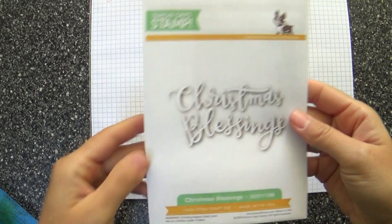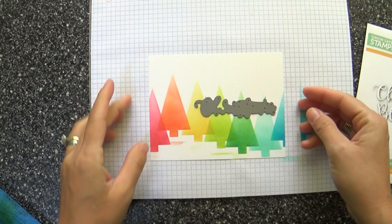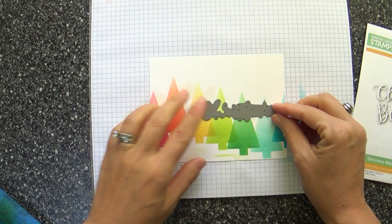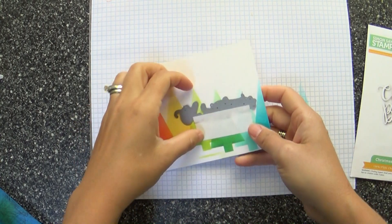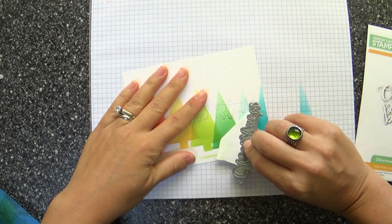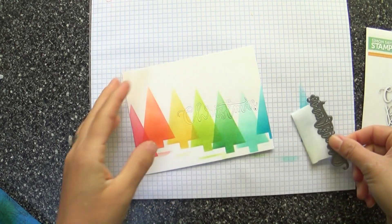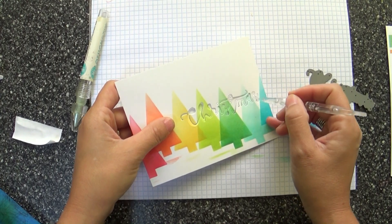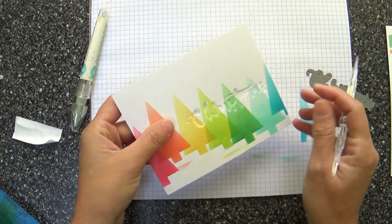Now we're taking the Christmas Blessings die set—I'm just using the Christmas word and I'm going to die cut that right into my panel there, right on top of the trees and everything. You can see how it all remained intact, luckily, because I want to make sure and save all those little nooks and crannies, all those pieces that go on the inside of the C and the H and the dot of the I and the A and all that stuff. We're going to need that because we're going to be adhering that back into it.